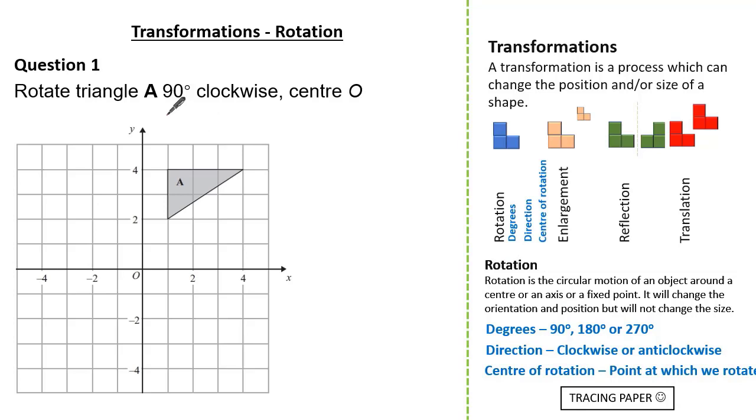Question 1 asks us to rotate triangle A 90 degrees about the centre O. Now the centre O is the origin, coordinate (0, 0).